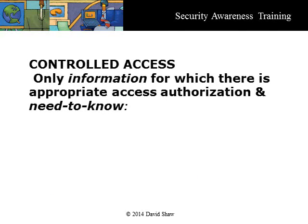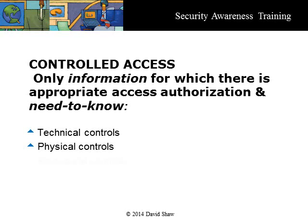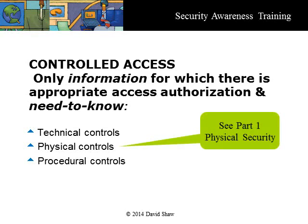Controlled access is the principle that a person or any system component should be granted access only to that information for which appropriate access authorization and an established need-to-know are approved. You should be granted access only to those resources necessary to perform the assigned task. Controlled access is normally achieved through a combination of technical, physical, and procedural means. Physical security, covered in Part 1 of this series, is the first layer ensuring that only authorized people have physical access to a system and its networks.